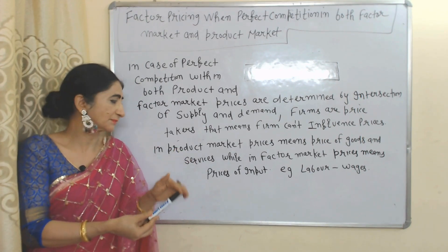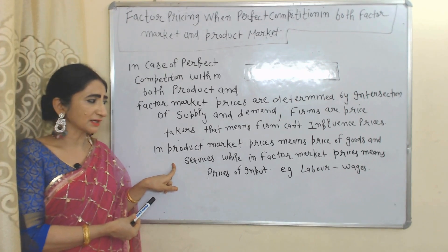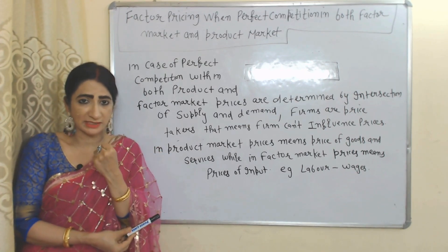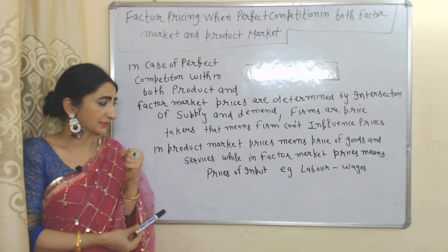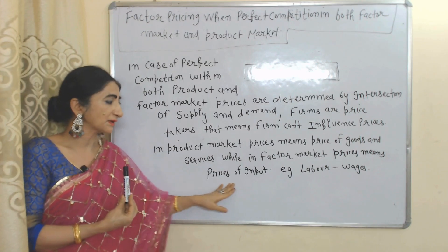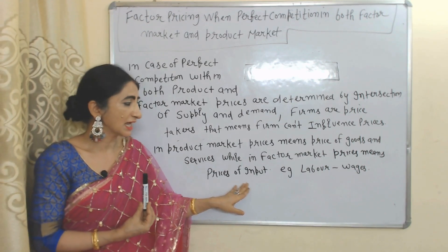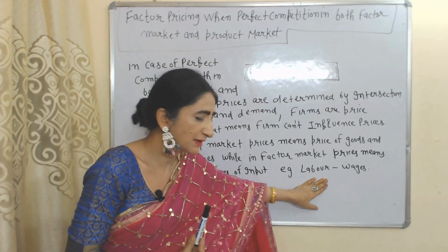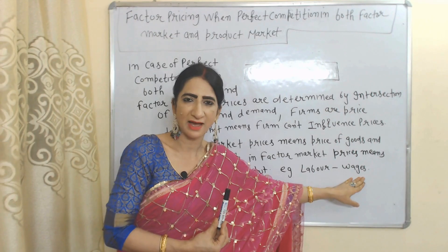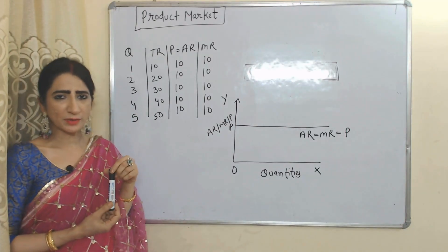In case of the product market, prices mean prices of goods and services. But in case of the factor market, prices mean prices of inputs. As we know, labor is an input, and the price of labor is wages. Firstly, we will see equilibrium in the product market.